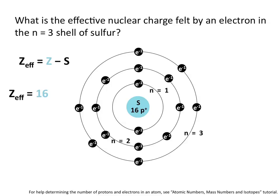Both the n equals 2 and n equals 1 shells are inner shells, so the number of inner shell electrons is equal to 10. This makes the effective charge for an electron in the n equals 3 shell of sulfur equal to 6.